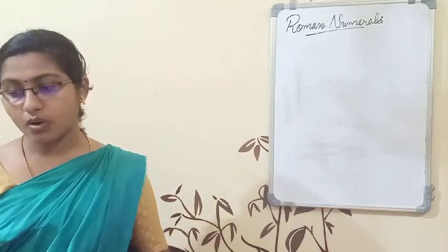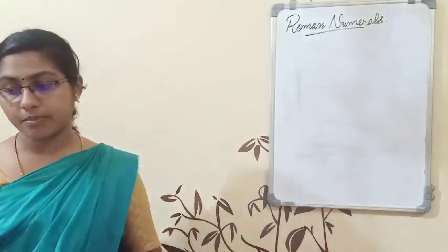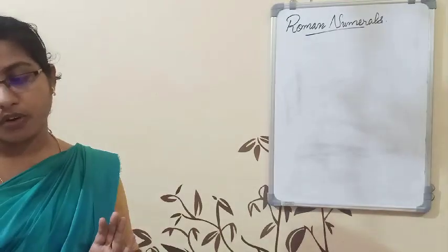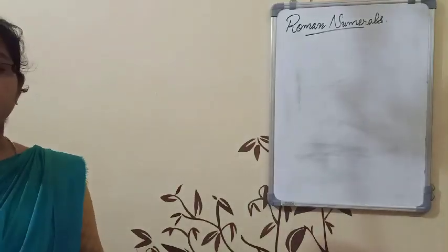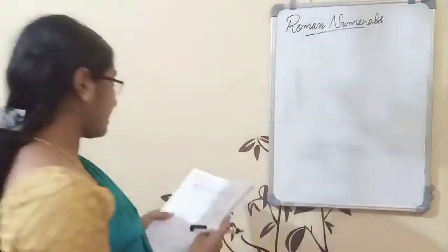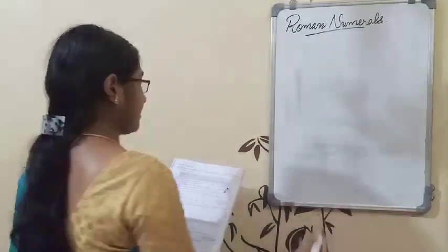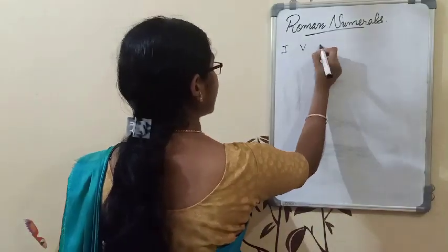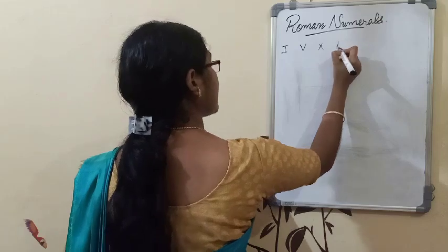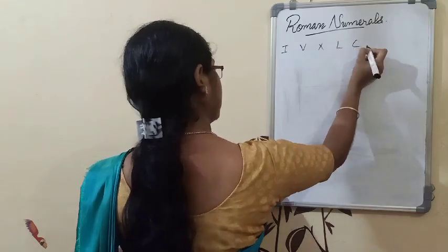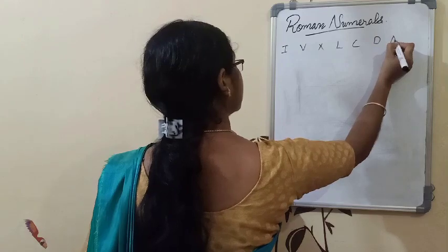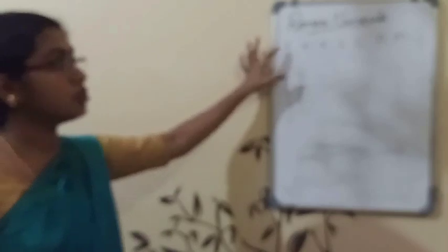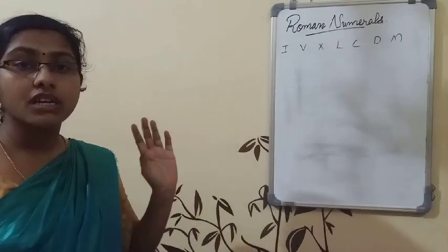They used only seven symbols to write numbers. The Roman numerals or Roman symbols are: I, V, X, L, C, D, and M. These are the Roman numerals or Roman symbols.